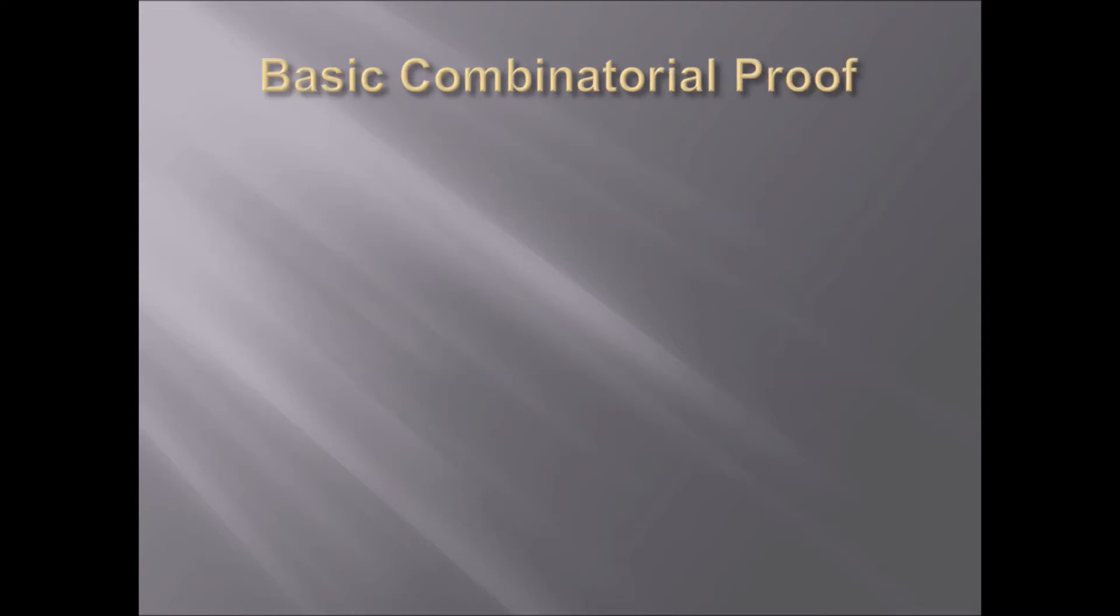Now I want to go into a basic combinatorial proof. I'm going to have another video up on this later that goes more in depth. But basically, we are going to prove that C(n,k) = C(n,n-k). And we are going to do this by counting bitstrings. Here's how we're doing this.